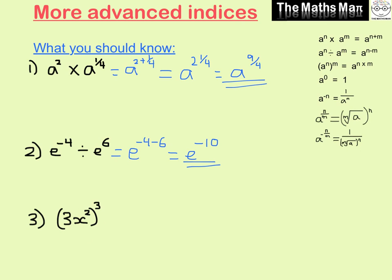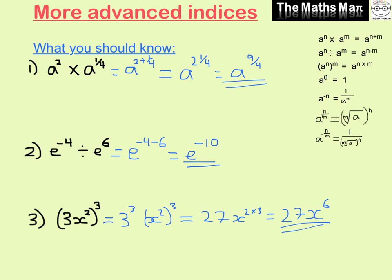Looking at number 3, we have 3x squared in brackets with a cube outside. This means we need to cube everything inside the bracket, so we break it down into 3 cubed times x squared cubed. 3 cubed is 27, and for the x squared part we multiply the powers — 2 times 3 — giving us 27x to the power of 6.